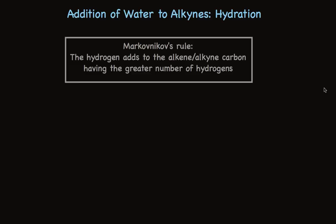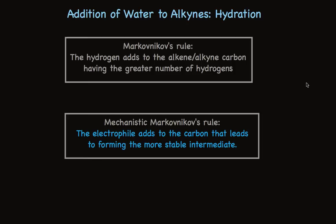Just as a quick reminder, Markovnikov's rule says that the hydrogen adds to the alkene or alkyne carbon having the greater number of hydrogens. The mechanistic version of Markovnikov's rule states that the electrophile adds to the carbon that leads to forming the more stable intermediate.